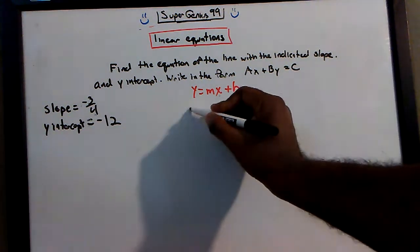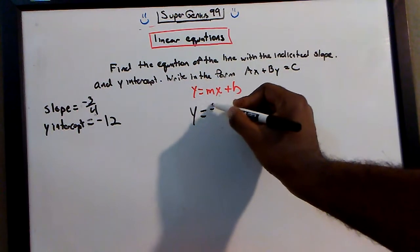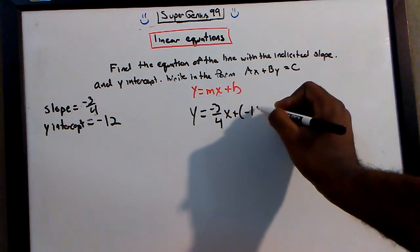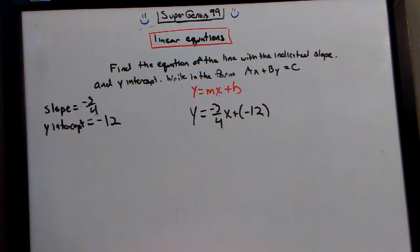Let's plug it in. Y is equal to negative 3 fourths x plus negative 12. We'll leave it like that. You can say minus 12, but okay, we'll do minus 12. So bring the x over.